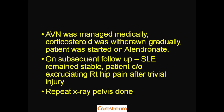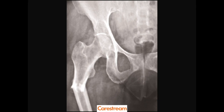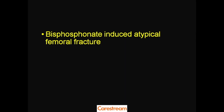Now there is a twist to the story. The AVN was managed medically, corticosteroids were withdrawn gradually, and the patient was started on bisphosphonate therapy — specifically alendronate, an anti-resorptive therapy given for the severe osteoporosis. On subsequent follow-up, the SLE remained stable, but the patient now complained of excruciating right hip pain after a trivial injury. A repeat pelvis X-ray was done, and we see a through-and-through diaphyseal fracture involving both cortices, perpendicular to the line of the bone — this is a bisphosphonate-induced atypical femoral fracture, which occurs when prolonged alendronate use causes a mismatch between osteoblastic and resorptive activity.